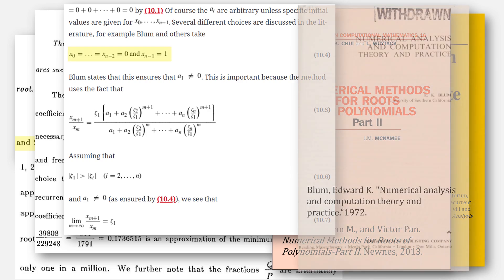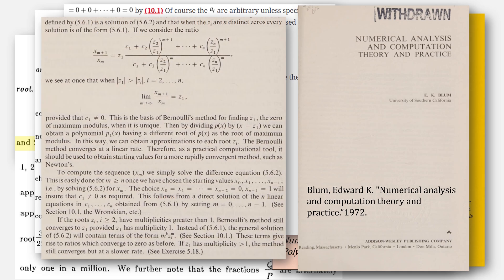In this paper by Blum, they write that with starting with zeros and a singular one, it will ensure that c1 is not equal to 0, which is what we want. They also note that the Bernoulli method converges at a linear rate.